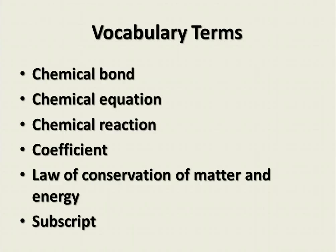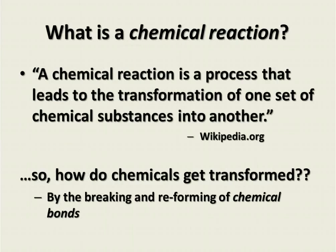We're talking about chemical bonds and chemical equations and reactions. So, what is a chemical reaction? Here's a definition from Wikipedia. A chemical reaction is a process that leads to the transformation of one set of chemical substances into another.